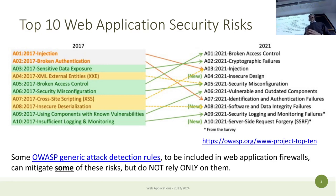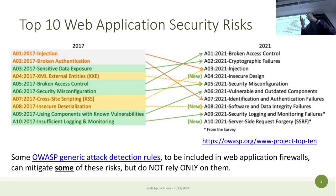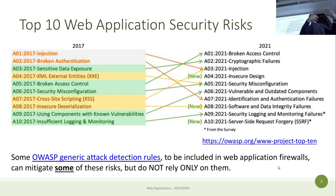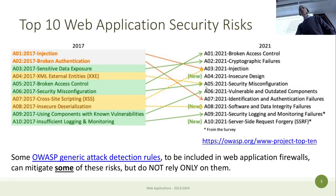There are things we cannot really handle inside our application — for example, if somebody is flooding the server with a lot of packets, you cannot really do anything in your application code. Something external must prevent excessive flooding. In this course we will focus on what we can do in the web application to prevent the most important security risks.